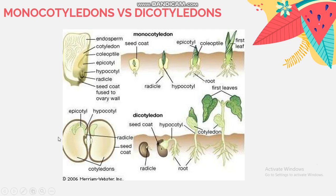For example, plants that have dicotyledons include soybean, peanut, mango trees, and also apple trees. Dicotyledons have tap roots and also net-veined leaves. So, do you understand?